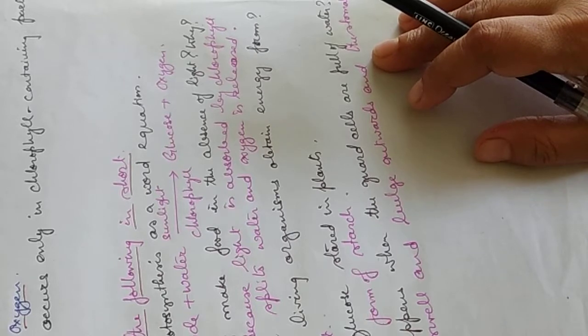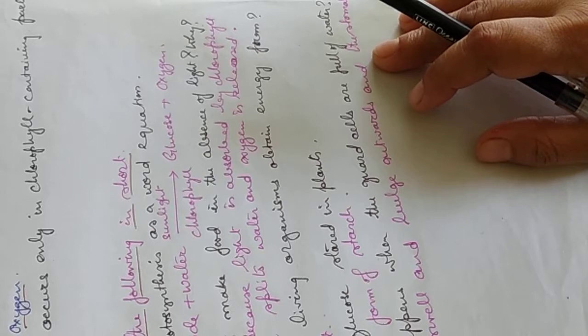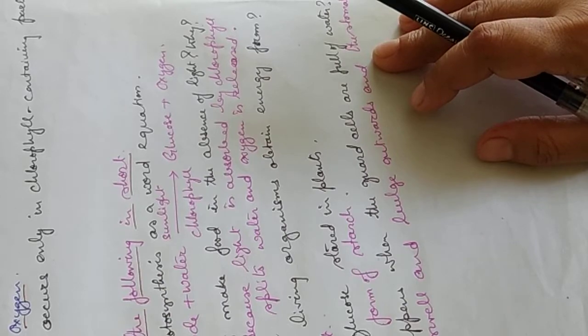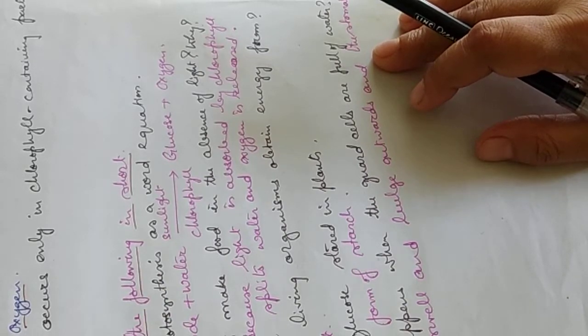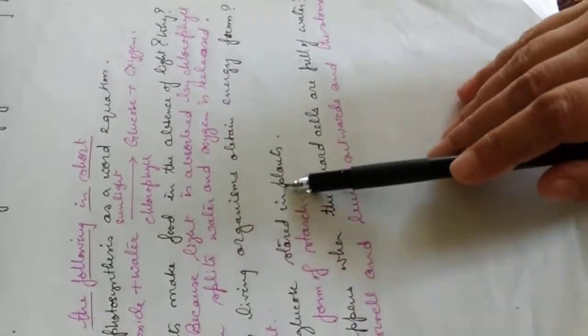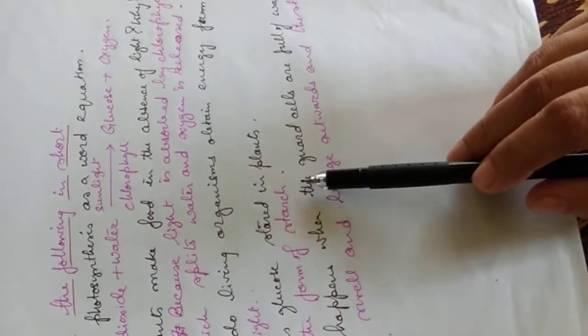H is for hydrogen and O for oxygen. So the H2O molecule is broken down and oxygen is released. Where do living organisms obtain energy from? They obtain energy from sunlight. How is glucose stored in the plants? In the form of starch.